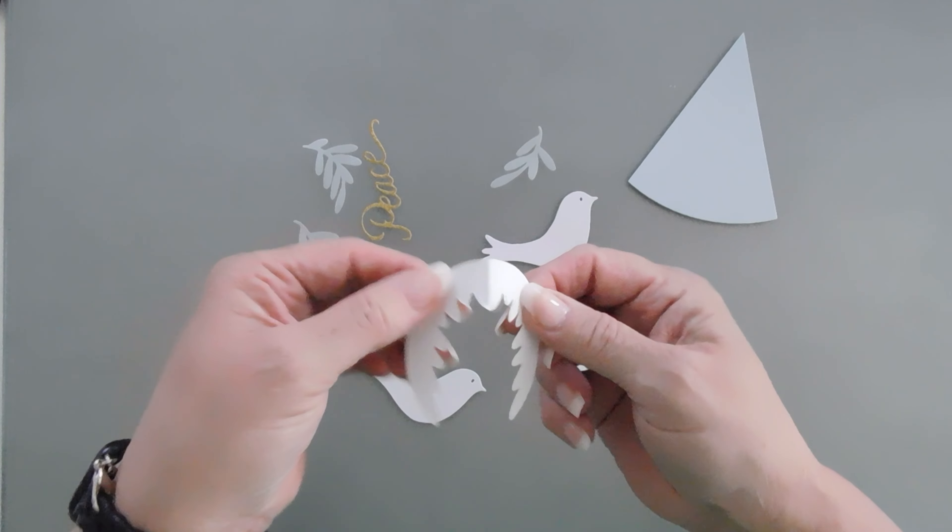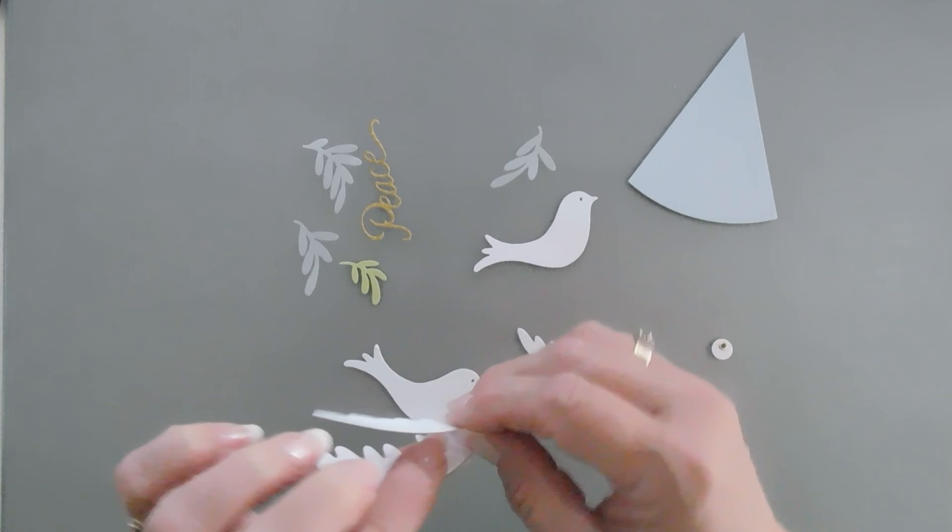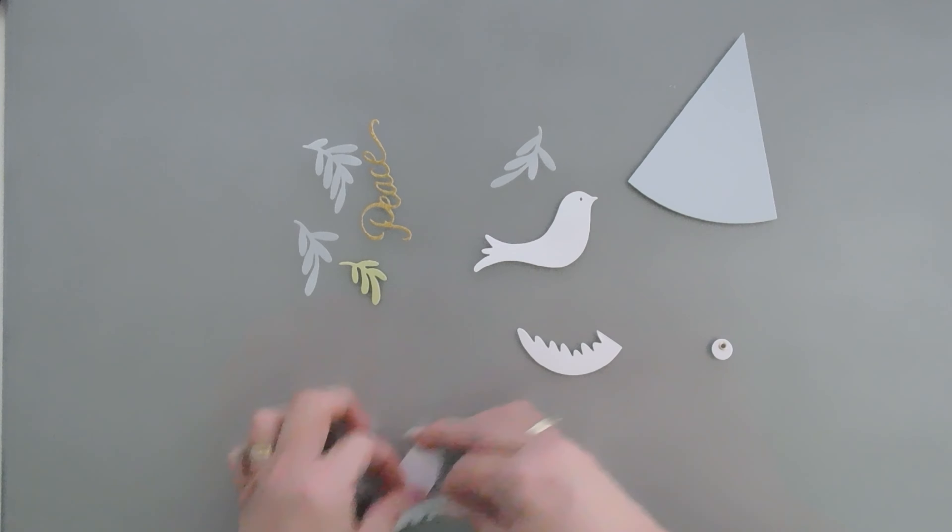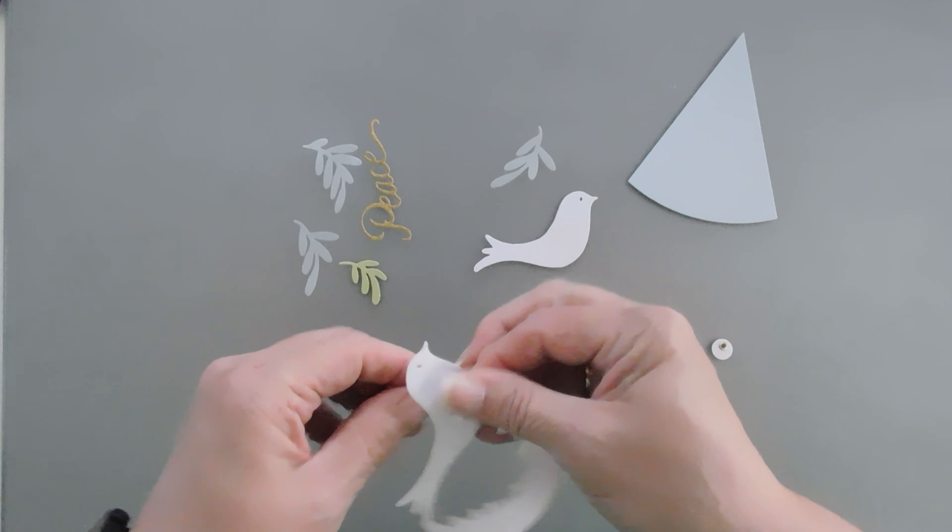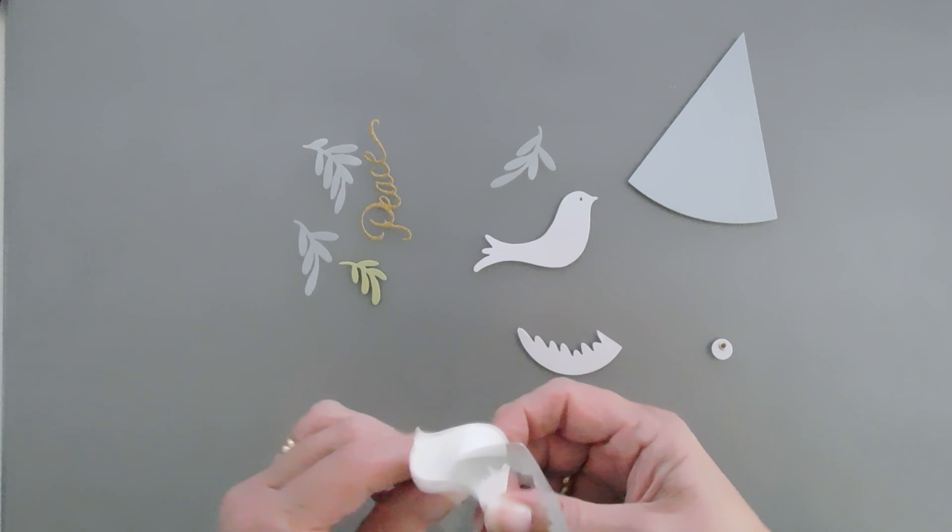And the neat thing about this die set is it creates a dove ornament that you can add to holiday gifts, hang on Christmas trees. It's super cute. I'll show you how to make one really quickly, but I do want to make a card with this set too. So I'll do both just to show you what this die set can do.